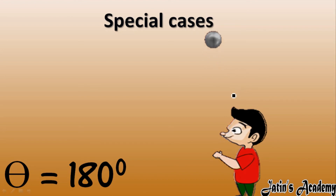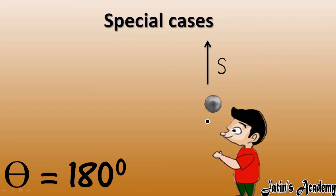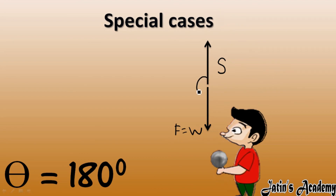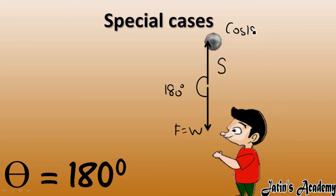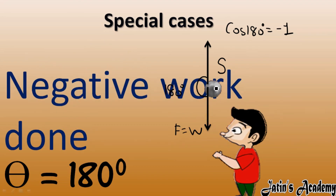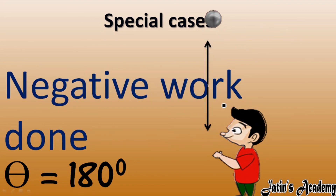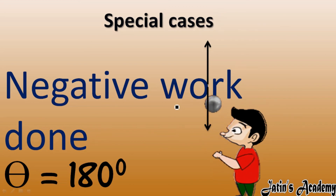Next special case: when a person throws a ball in the upward direction. In this case, displacement occurs in the upward direction and the weight of the ball acts in the downward direction. So the angle between force and displacement is 180 degrees, and cos of 180 degrees gives minus one. This means it is a case of negative work done — a boy throwing a ball upward is an example of negative work done due to gravity.